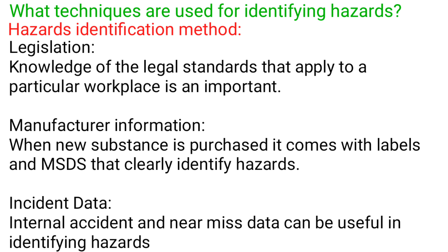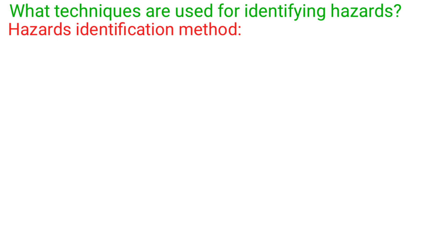Legislation: knowledge of the legal standards that apply to a particular workplace is an important hazard identification tool. Manufacturer information: when a new substance is purchased, it comes with labels and MSDS that clearly identify hazards. Incident data: internal accident and near-miss data can be useful in identifying hazards.